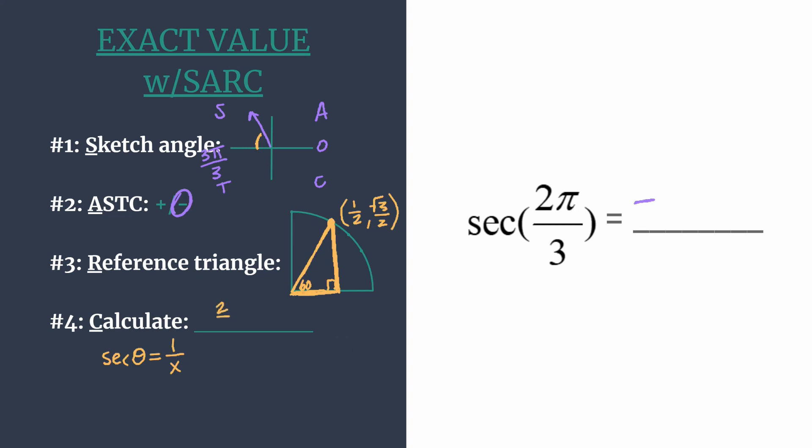and 2 is going to be our secant. And of course, it's negative 2, because we had already decided that the secant in the second quadrant should be negative. So the secant of 2 pi over 3 is negative 2.